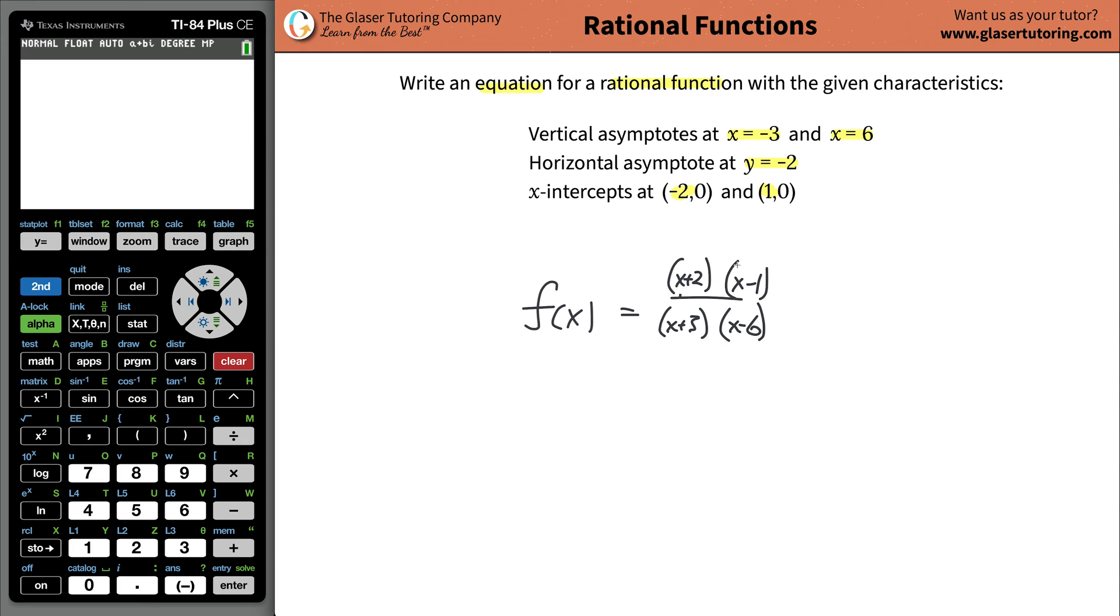Now not to overcomplicate this next part, if you have a horizontal asymptote, it's very simple. You have to place in a coefficient in front. So whatever this horizontal asymptote is, it's negative 2, you literally just going to put right in there negative 2. And that's all there is to it.